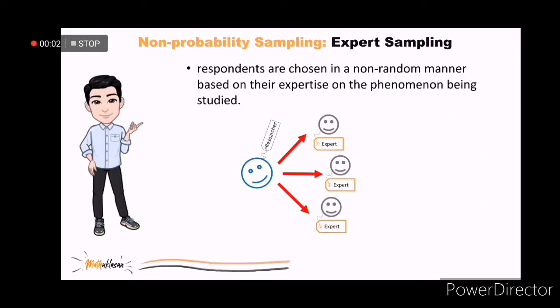The expert sampling is a technique where respondents are chosen in a non-random manner based on their expertise on the phenomenon being studied. Example: in order to understand the impacts of a new government policy such as the new tax system, you can sample a group of corporate accountants who are familiar with this act.